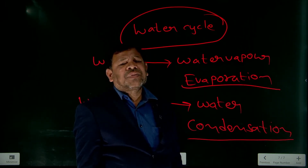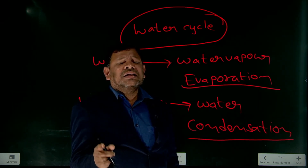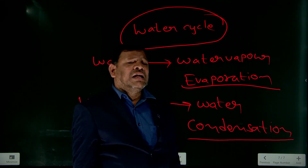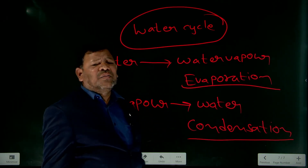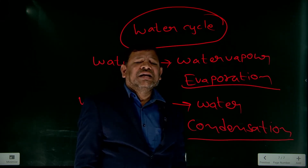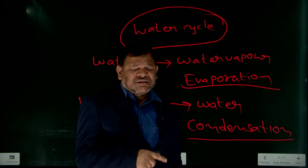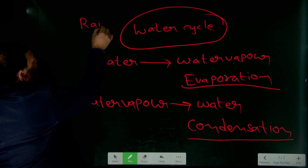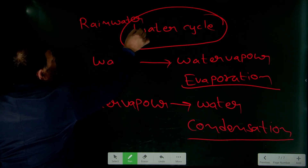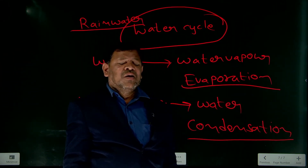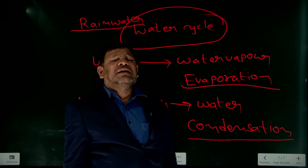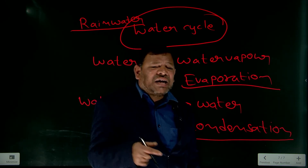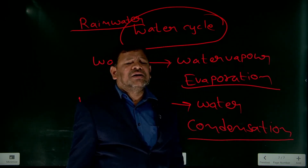Rain water has no color, no taste, and no shape — it is the purest form of water. But as rain falls, most impurities join the rain water, so it becomes polluted. That is why nowadays most diseases come from water, and you must boil the water, cool it, and then drink it.